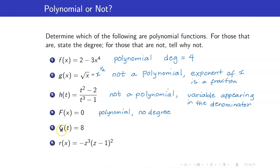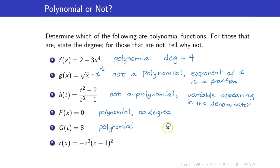What about g of t equals 8? Yes, this is a polynomial. Take note that you do not have any powers of t appearing, and 8 is your constant term. But 8 can be written as 8 times t raised to 0. So remember that the constant is just the coefficient of your variable raised to 0. Hence, the degree is equal to 0.